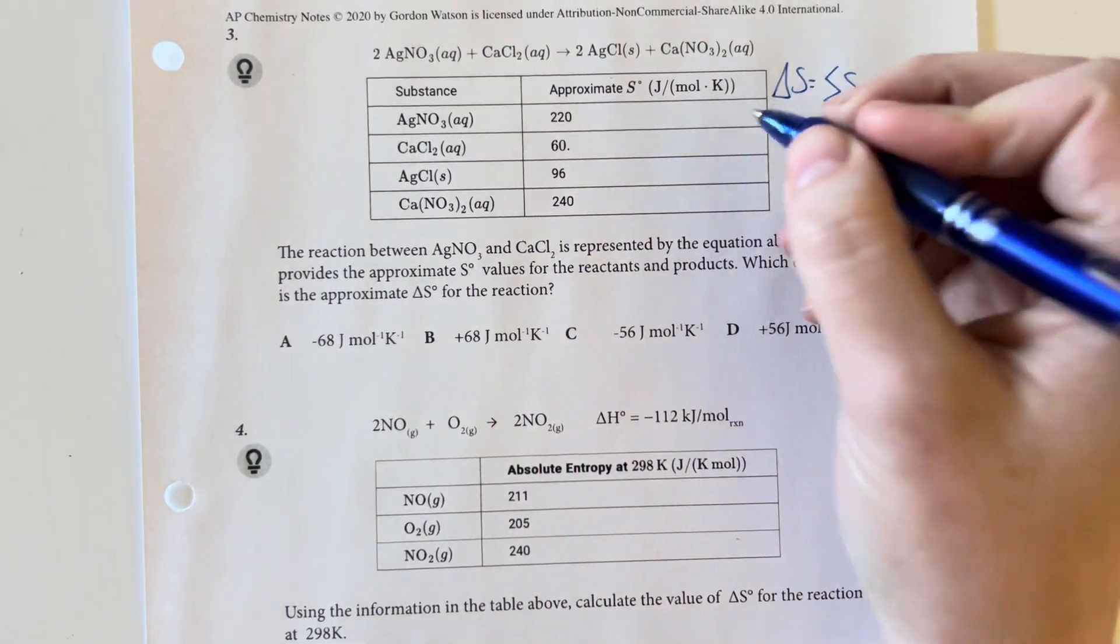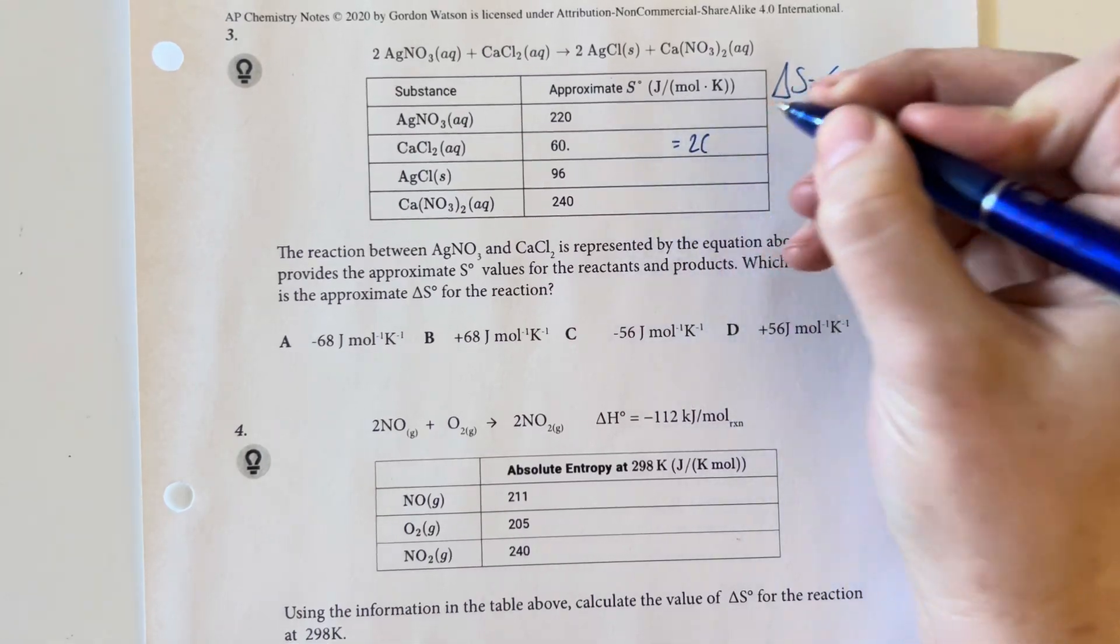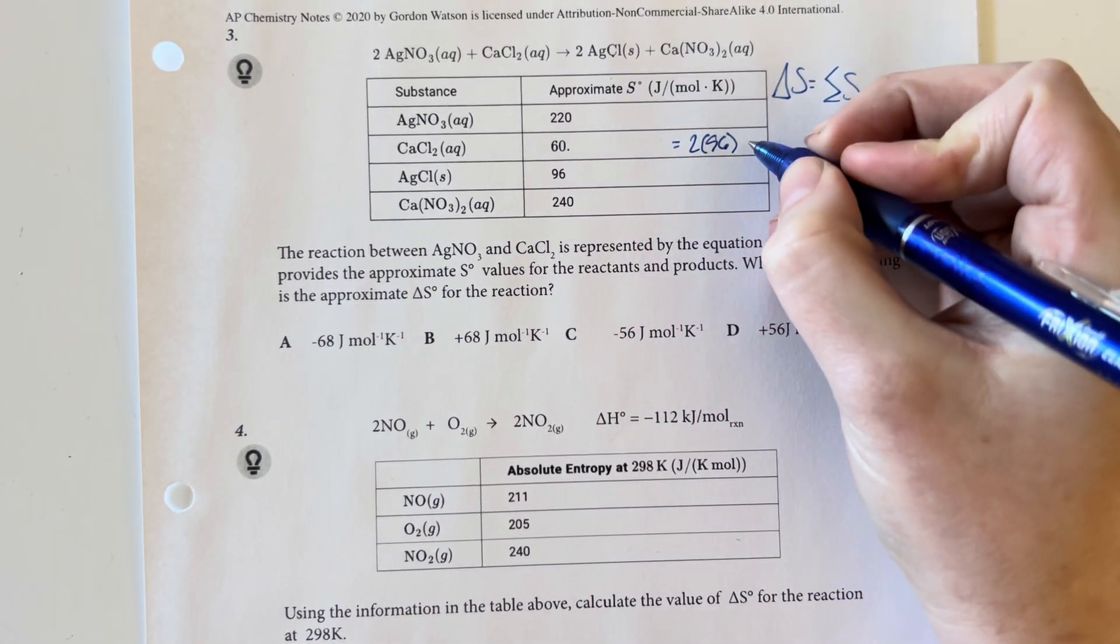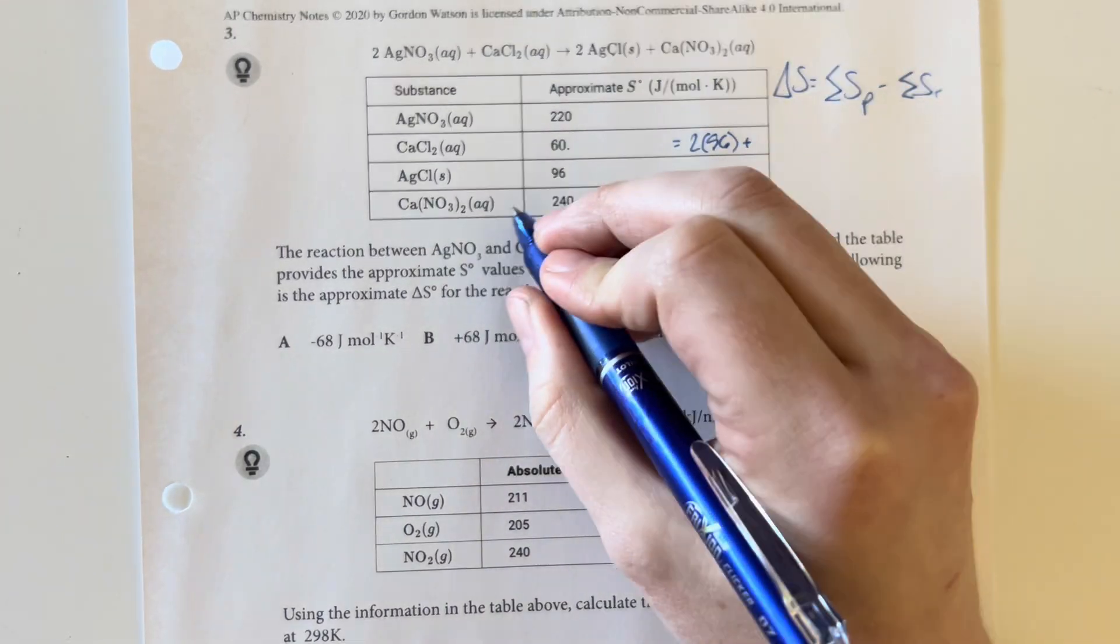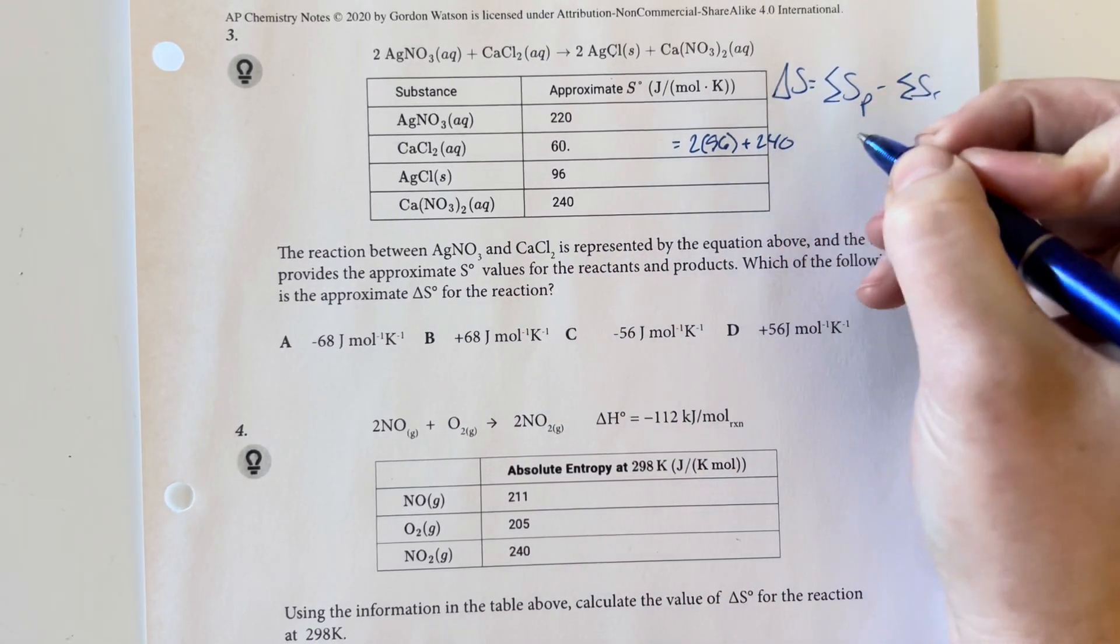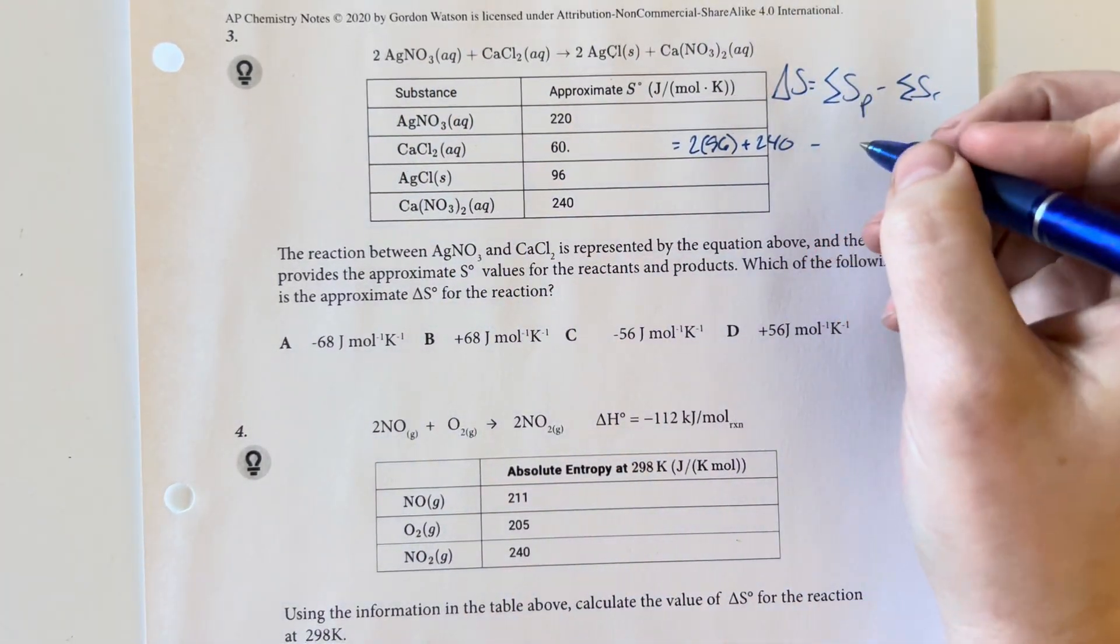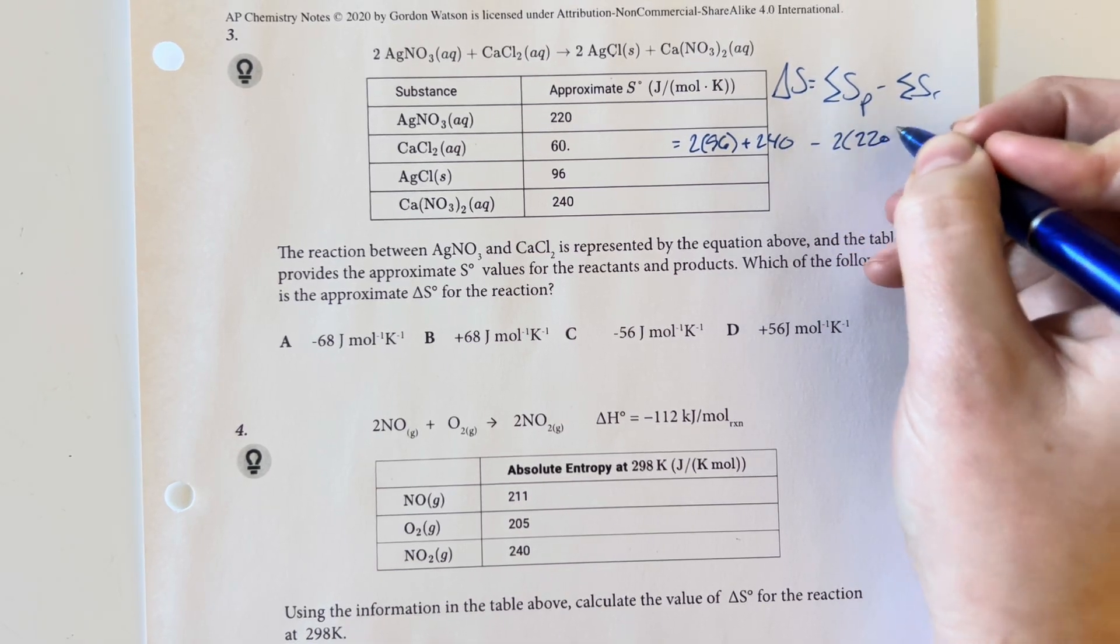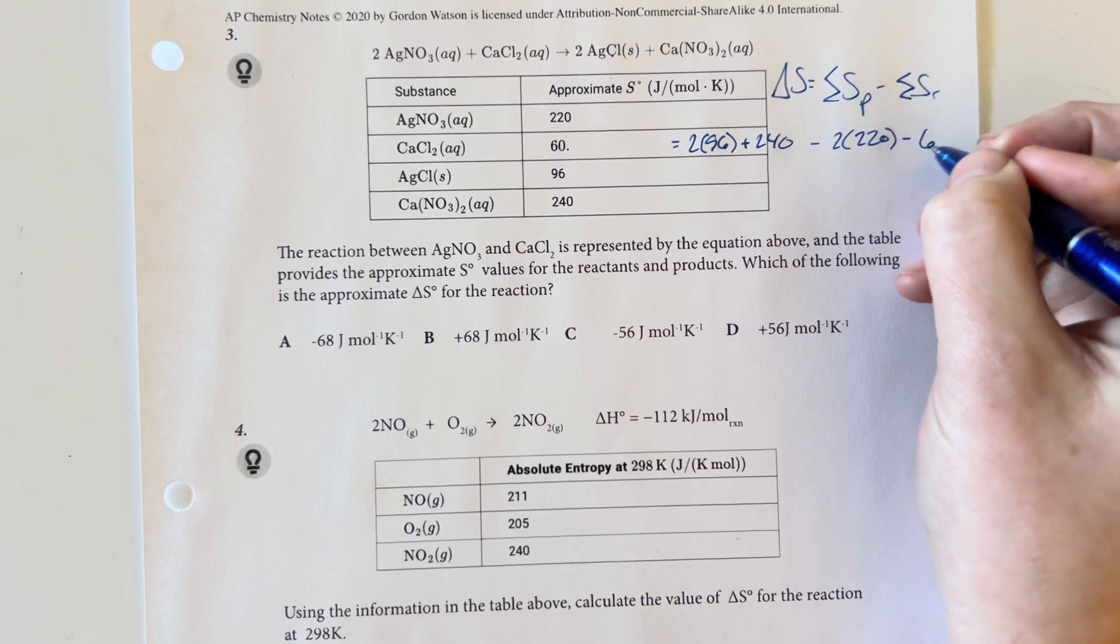Our products are 2 times the value for silver chloride, which is 96, plus one of the calcium nitrate, so 240, minus the 2 times silver nitrate, so 2 times 220, minus the calcium chloride, which is 60.